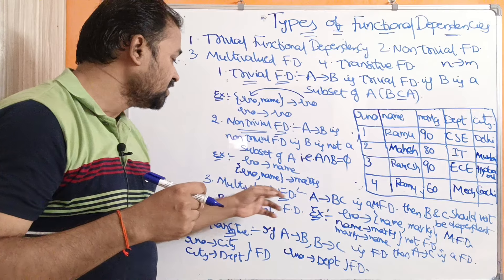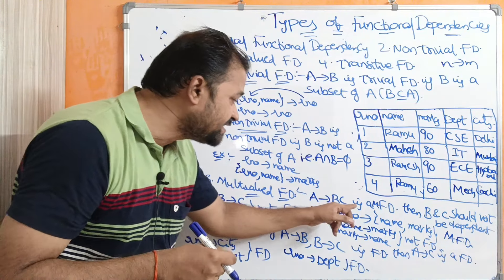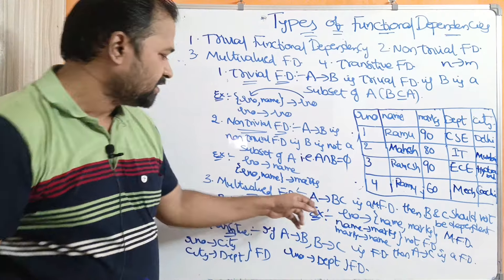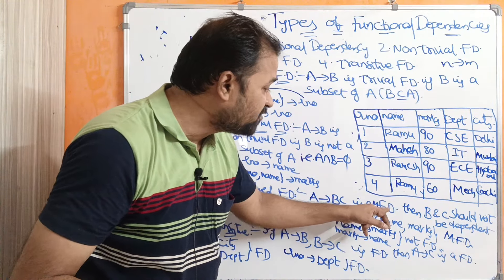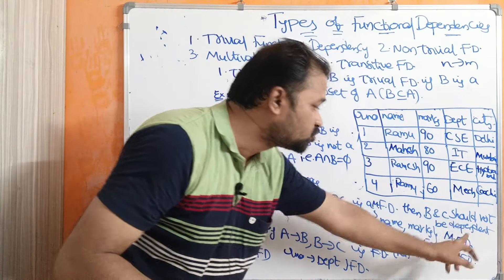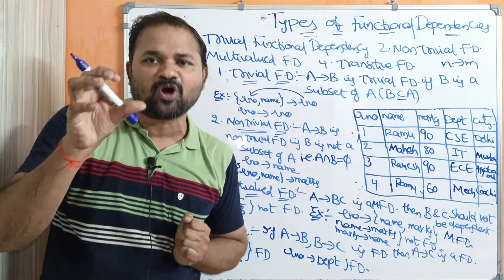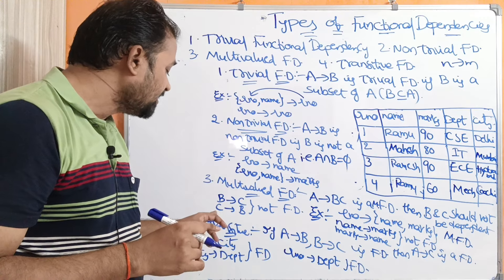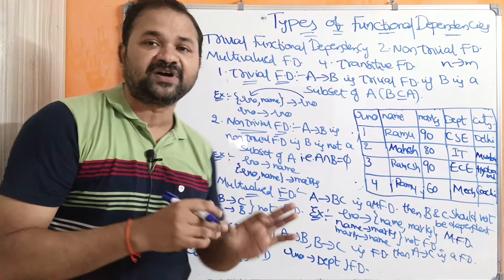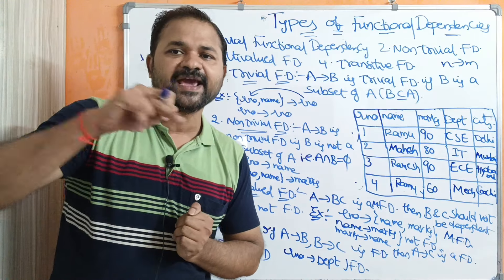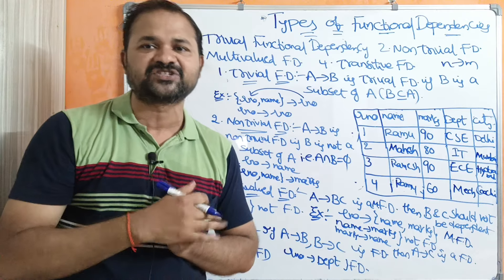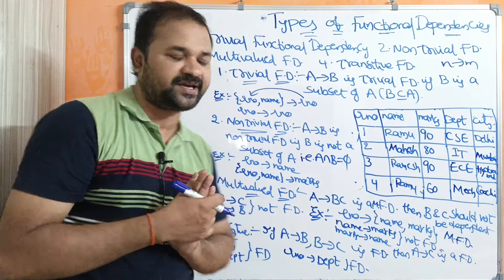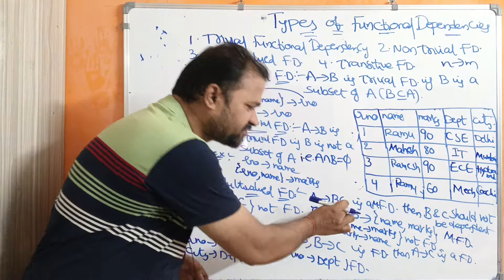Now let us see the third one — multi-valued functional dependency. A →→ B, C is a multi-valued functional dependency. Here we are taking two attributes on the dependent side. For this to hold, B and C should not be dependent on each other, meaning there should not be any relation between B and C. That is, B → C as well as C → B should not be functional dependencies.